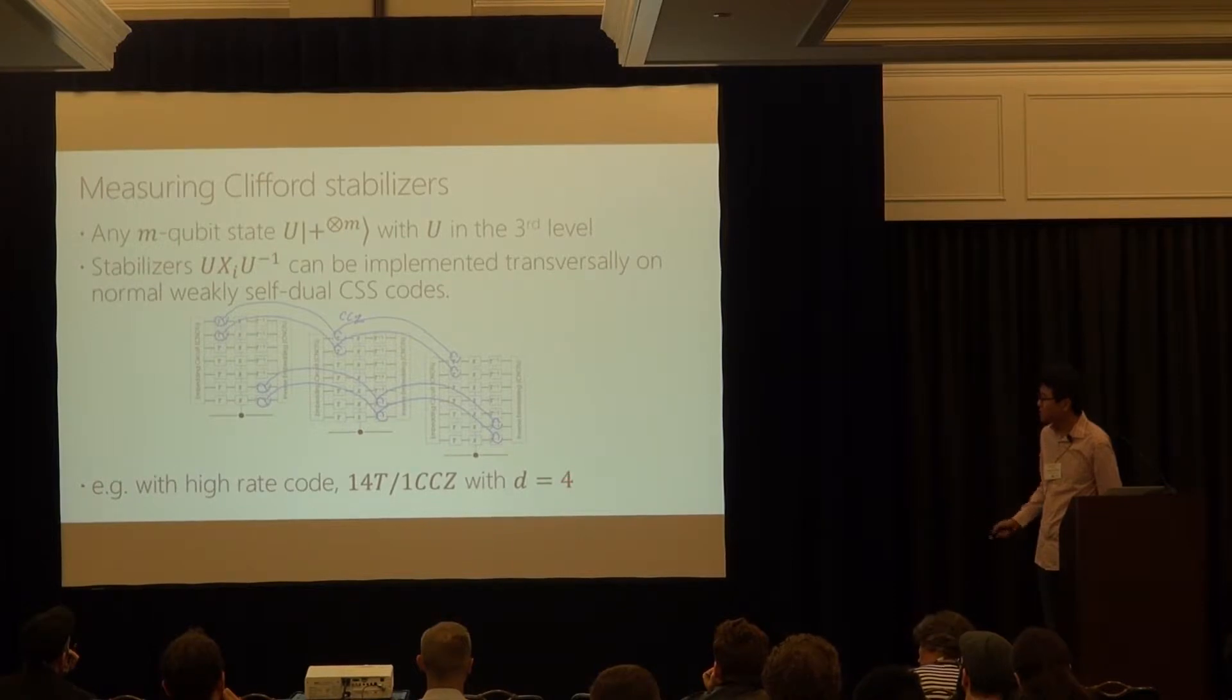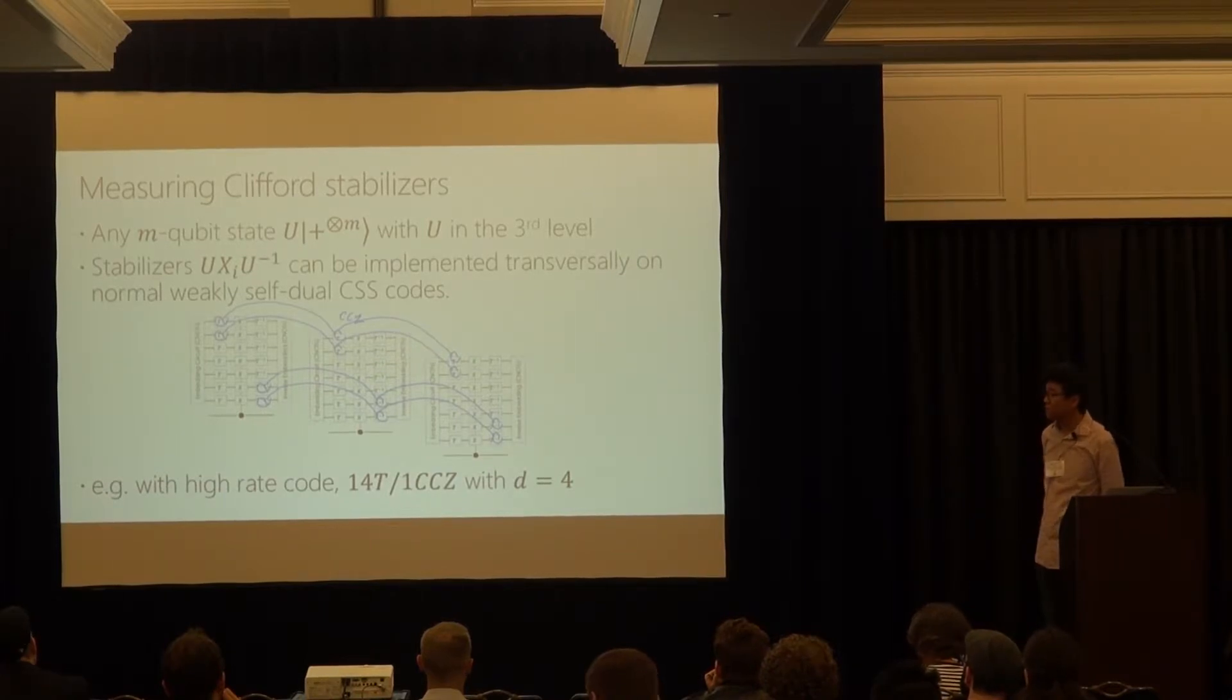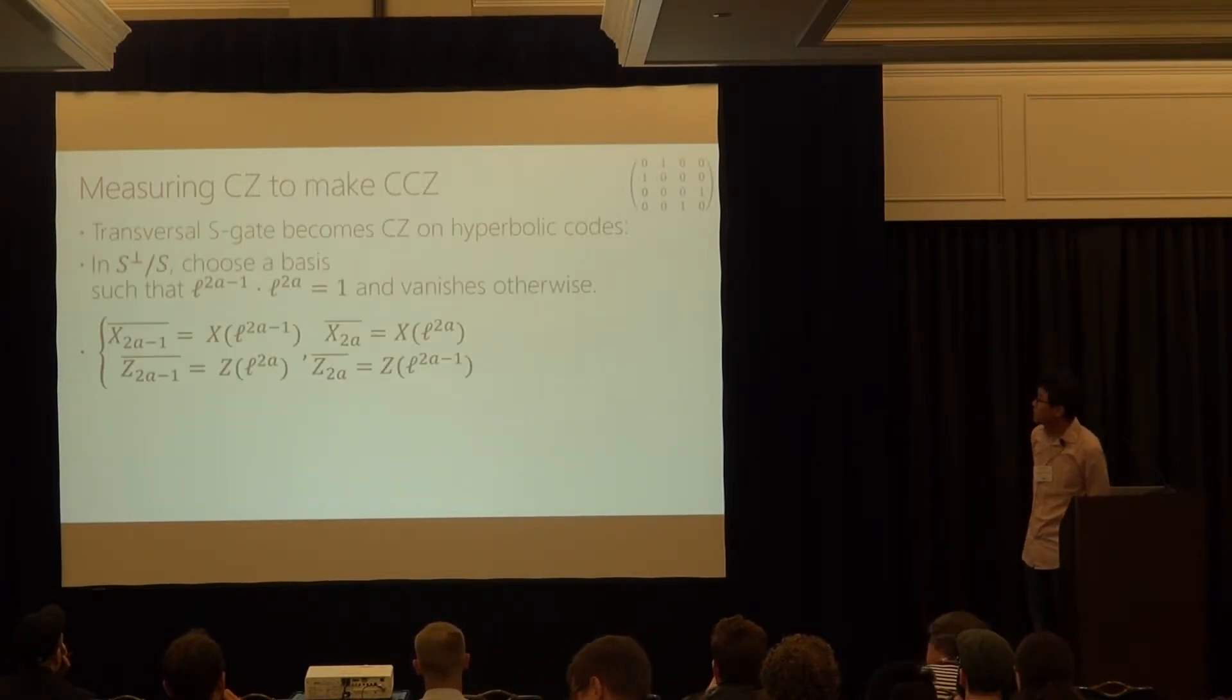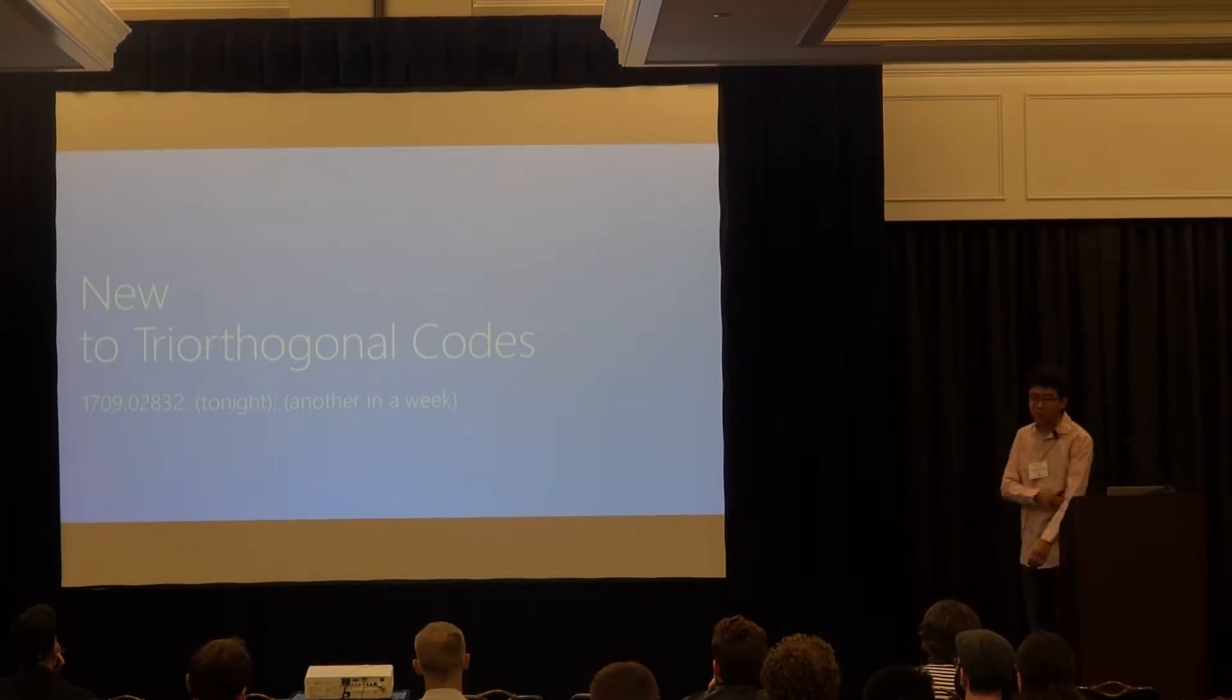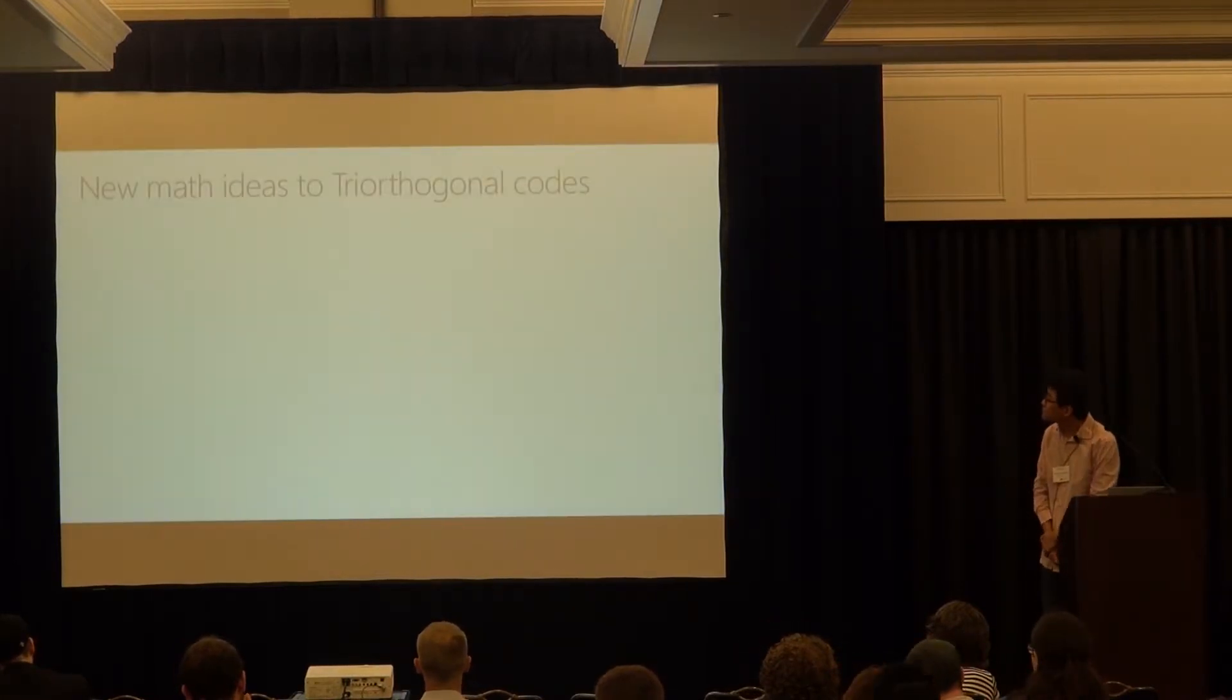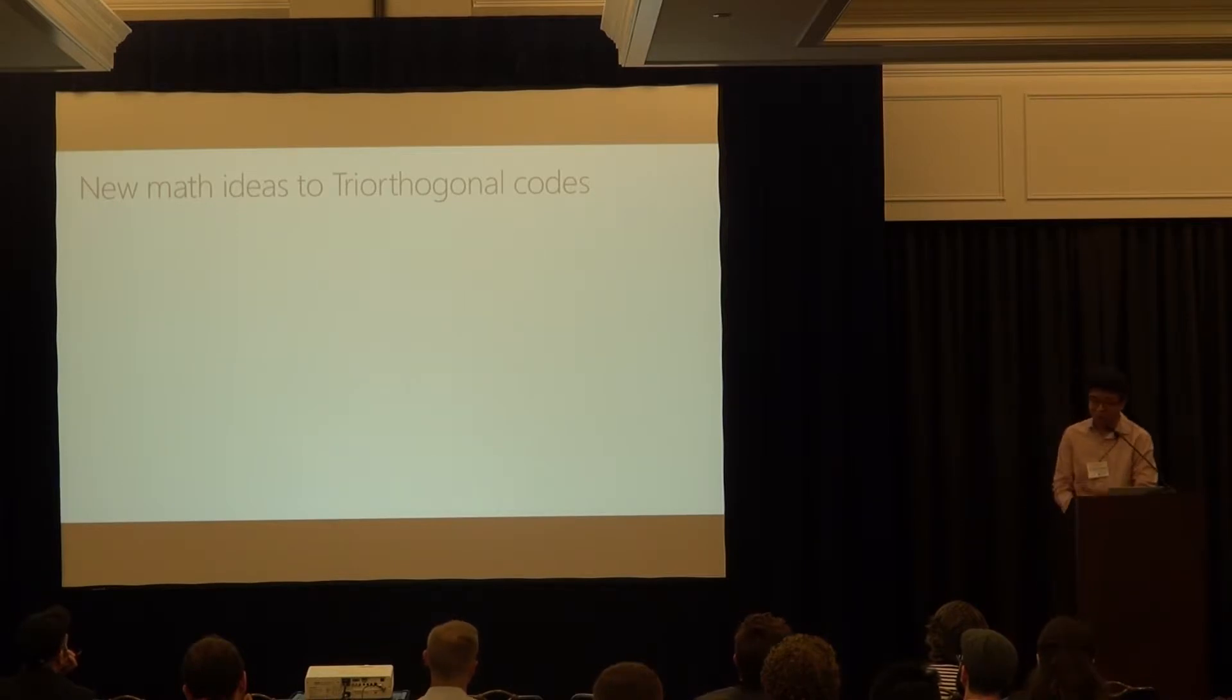And as an example, at the quartic order of error reduction, you can just consume 14 T gates instead of 32 previously, to output one CCZ state. Okay. Let me skip this one. And let me switch gears to come to the old one using the how to make a good magic state out of bad ones. And here we make some observations to how to make a better triorthogonal codes. So here are the core main ideas. You can simply puncture triorthogonal space and then you will obtain a triorthogonal code for T gates.